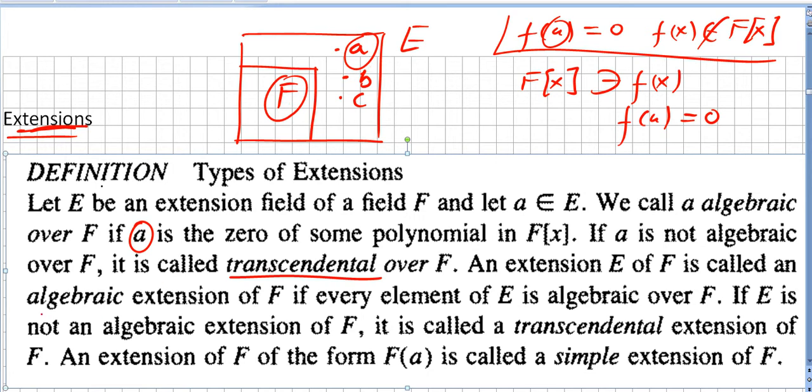If E is not an algebraic extension of F, it is called a transcendental extension of F. An extension of F of the form F(a) is called a simple extension of F.